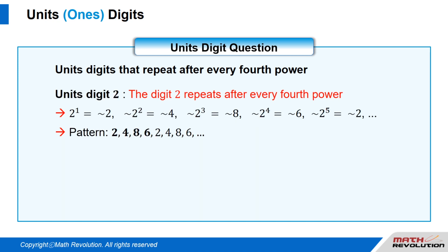Units digit 2: the digit 2 repeats after every fourth power. That is, 2 to the power of 1 equals 2, 2 to the power of 2 equals 4, 2 to the power of 3 equals 8, 2 to the power of 4 equals 6, and 2 to the power of 5 equals 2, and so on. Thus, the pattern is 2, 4, 8, 6, 2, 4, 8, 6.